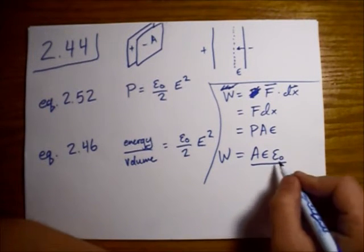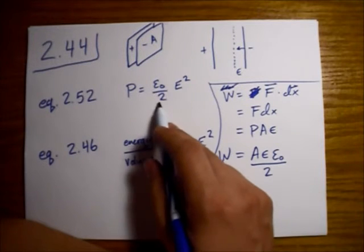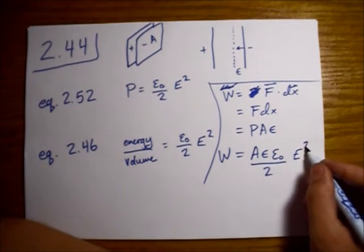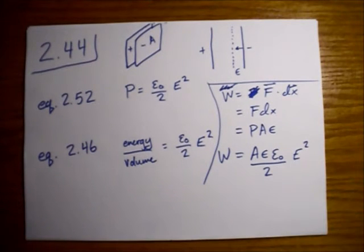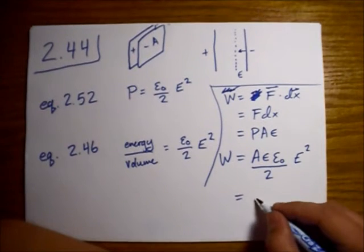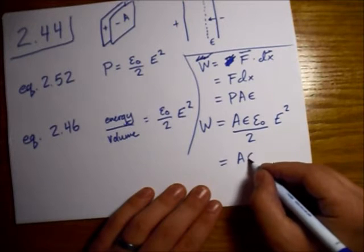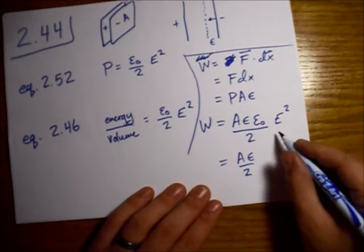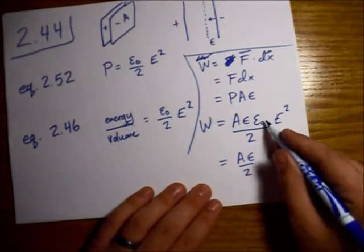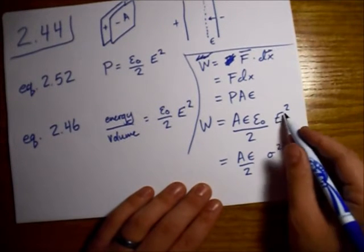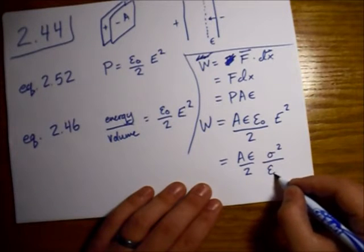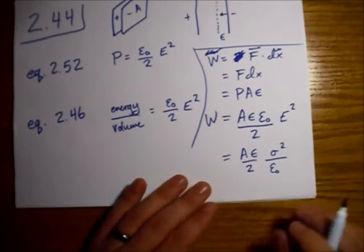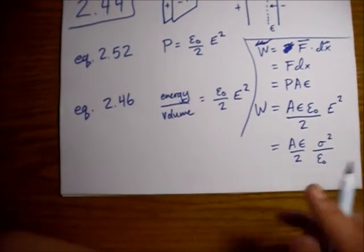So here's our permittivity-free space, not to be confused with our other epsilon. We have this factor of 2, and then we have this E squared. Which, you know, it could be sigma divided by permittivity-free space for a capacitor. Let's just write that in, why not? So we have A, we have our displacement epsilon, we have our 2, and then plugging in a sigma over epsilon, we get the sigma squared up at the top, and 1 power of epsilon on the bottom, because it's going to cancel with this other one. So we went into that a little bit more detail than maybe we needed to.